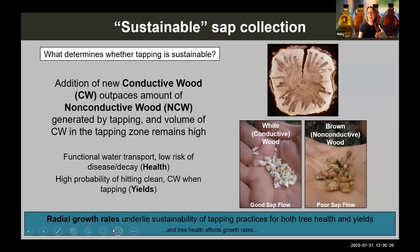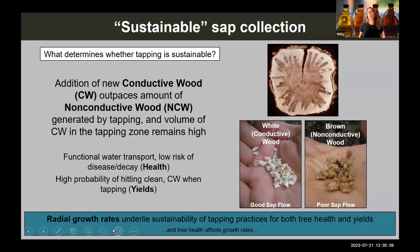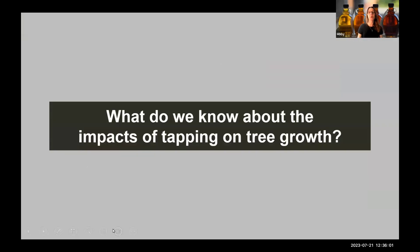This provides sustainability from both a tree health and sap yield standpoint. If we have a copious amount of conductive clear sapwood in the tree, the tree has a functional water transport system, a lower risk of disease and decay, and we have a high probability of hitting clear conductive wood when tapping. So radial growth rates really underlie the sustainability of tapping practices for both tree health and yield — radial growth is the great integrator of all things.